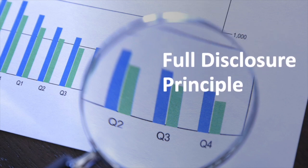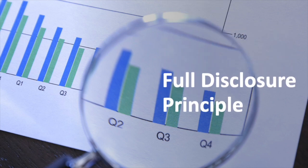The sixth principle is the full disclosure principle. This is the concept that you should include in the financial statements, or alongside them, all of the information that may impact readers' or users' understanding of those statements. The accounting standards have greatly amplified upon this concept in specifying an enormous amount of informational disclosures.